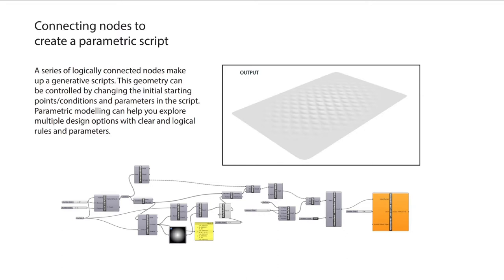The way Grasshopper works is you connect a series of information and geometry together with certain parameters, and it will generate the output. Here is one of the outputs from a script — a surface with an undulating, gradual change of a diamond pattern. In your free time, you can try to mimic this script; I'll upload it with the supporting documents. Note that this example requires a plugin called Weaverbird, so please install it if you want to have a go.